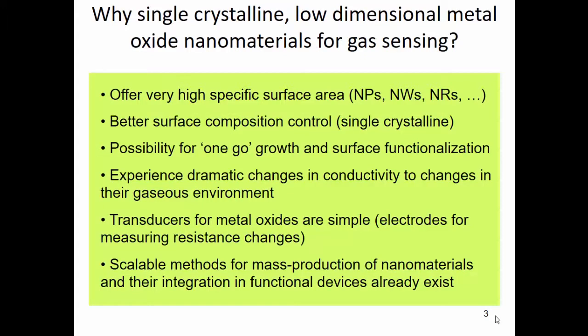Why is it important to use this sort of nanomaterials for gas sensing? If we use low-dimensional materials, we have most of the atoms on the surface — they have very large surfaces and very large surface-to-volume ratios. This means that most of the atoms of the nanomaterial are exposed to the environment, offering very high specific surface areas. Nanoparticles, nanowires, nanorods, and even two-dimensional materials, if they are single-crystalline, offer better surface composition control compared to polycrystalline materials.